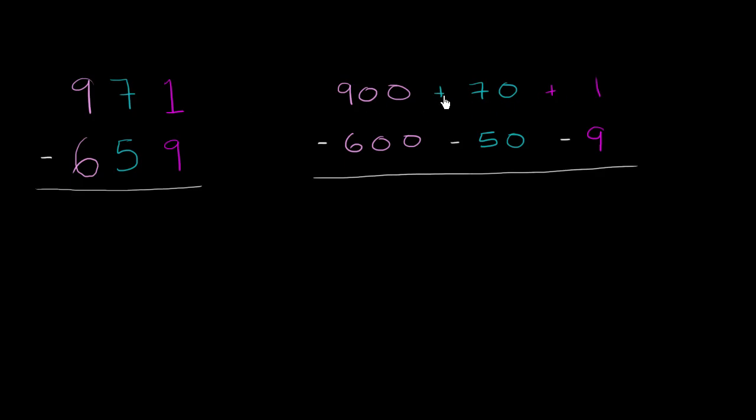And the easiest place to go is, look, we've got 70 here. Why don't we take 10 from here, and we'll be left with 60, and give that 10 to the ones place. So if you add 10 to 1, what do we have? Well, then we're going to have 11.